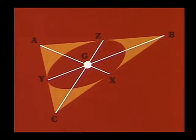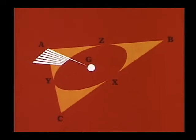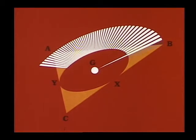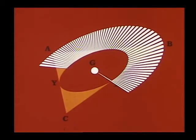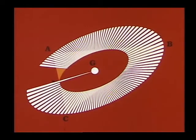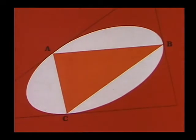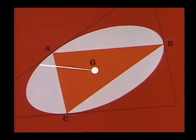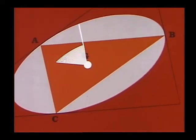Hence, a similarity transformation with center G and a negative constant of similarity will map X, Y, Z onto A, B, C, and the inscribed ellipse onto an ellipse which passes through the vertices of triangle A, B, C. We note that the tangents to this ellipse at A, B, and C will be respectively parallel to the opposite sides of the given triangle, since tangents map into parallel tangents. Conversely, if we can construct an ellipse through A, B, and C which has tangents at these points parallel to the opposite sides BC, CA, and AB, a dilatation with center G will map this ellipse onto one which touches the sides of the triangle at the midpoints.